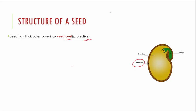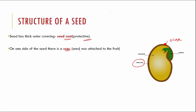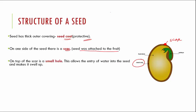Going deeper, on one side of the seed there is a structure called a scar. This scar is the point at which the seed was attached to the fruit. Just above the scar, there is a small hole. This hole allows water to enter the seed — when you soak seeds overnight, they pull in all the water and swell up because the water enters through this hole.